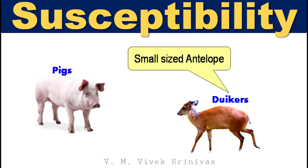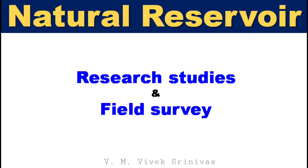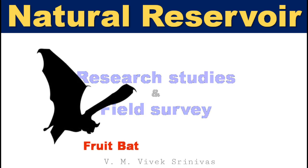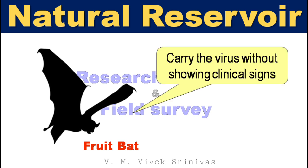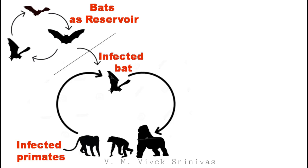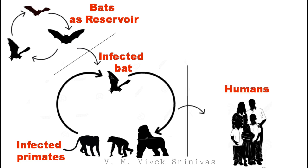Duikers are small-sized antelope present in African countries. The results of research studies and field surveys in Africa strongly suggest that fruit bats are the natural reservoirs for Ebola and Marburg viruses. In fact, these bats carry this virus without showing clinical signs, so the bats are the natural reservoirs. These viruses appear sporadically and produce high mortality in non-human primates. Humans may get infection through contact with infected non-human primates or from infected bats.